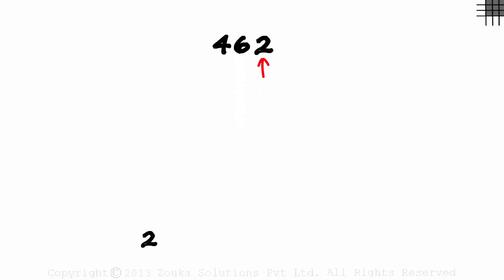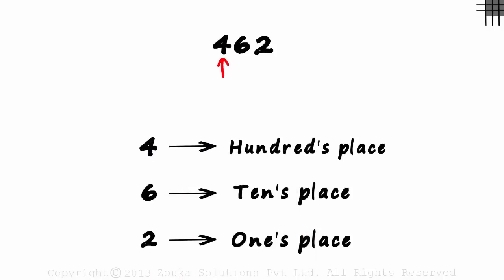Here the digit 2 is in the ones place, while 6 is in the tens place, and 4 in the hundreds place. With the help of place value, let's try to break this number down.